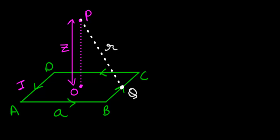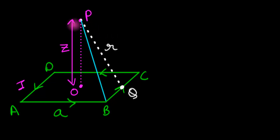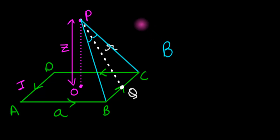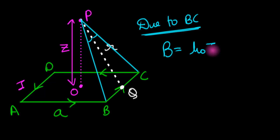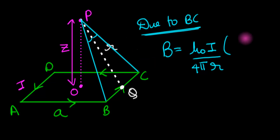We also draw lines from P to the endpoints B and C, giving us angles α and β. By symmetry, these two angles are equal, so the magnetic field due to BC at point P is: B_BC = (μ₀I)/(4πR) × 2 sin α. Our goal is now to find R and sin α.